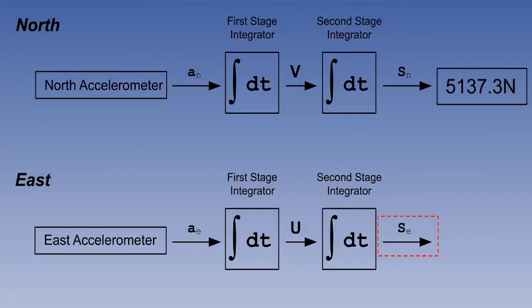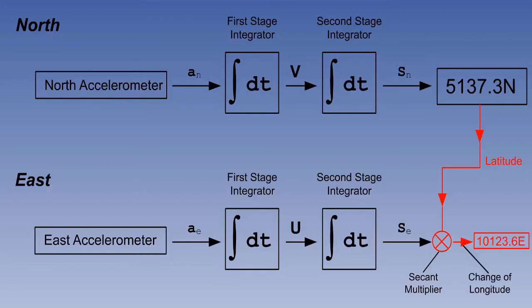SE is coming out of the second stage east-west integrator. SE is nautical miles in the east-west sense, which is departure. We therefore take this departure and multiply by the secant of latitude. Present latitude is already available to us, so the system takes a pick-off latitude from the north channel and feeds it to a microprocessor, which calculates the secant and multiplies it by the output of the east-west second stage integrator, thereby converting the departure into change of longitude.